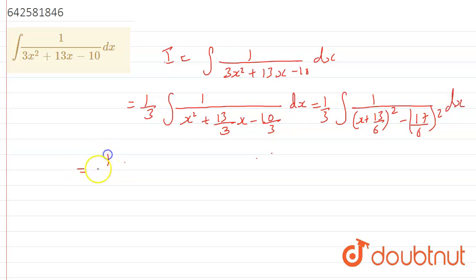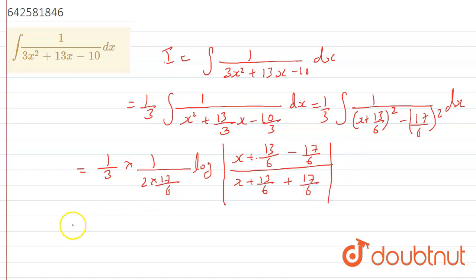getting here (1/3) × (1/(2 × 17/6)) log of the magnitude of |x + 13/6 - 17/6| / |x + 13/6 + 17/6|. Okay, now after that when we solve this we are getting here